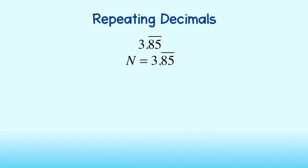First, we assign a variable N to the entire number. Now, since the repeating digits extend to the hundredths place value, we will multiply both sides of the equation by 100. This leaves us with 100N equal to 385.85 repeating.